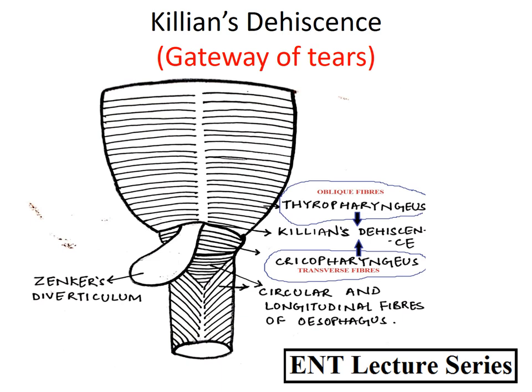Kilian's dehiscence is a potential weak area in the inferior constrictor muscle between the thyropharyngeus and cricopharyngeus fibers. It has two clinical importances. First, it is called the gateway of tears because in rigid esophagoscopy it is a potential site for esophageal perforation.